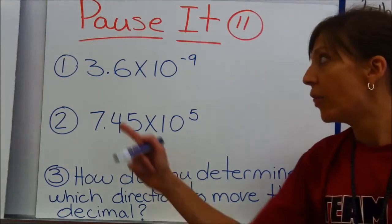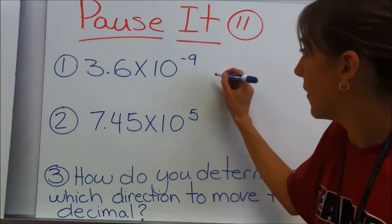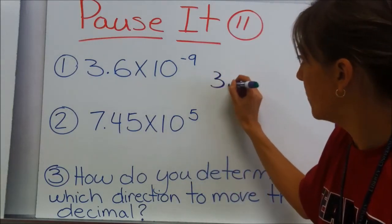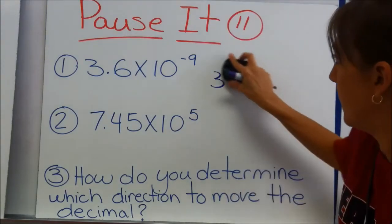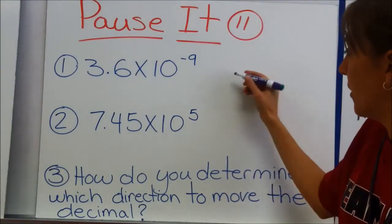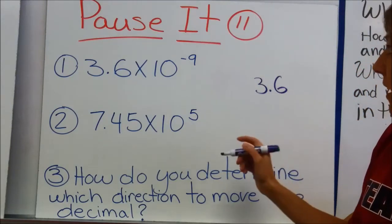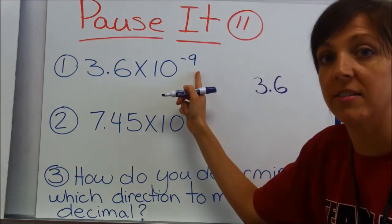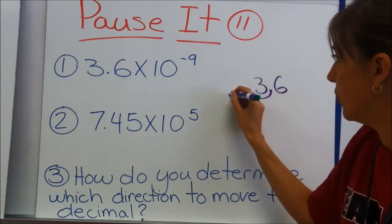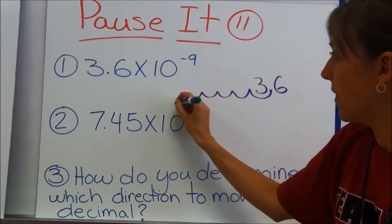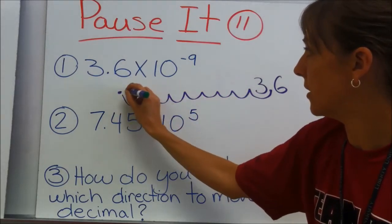3 and 6 tenths times 10 to the negative ninth — I'm going to rewrite that as 3.6 times 10 to the negative ninth. I'm going to move 9 places to the left, because that's a negative number, and negative numbers are to the left: 1, 2, 3, 4, 5, 6, 7, 8, 9. I'm going to put my decimal here and fill in my place value spots.